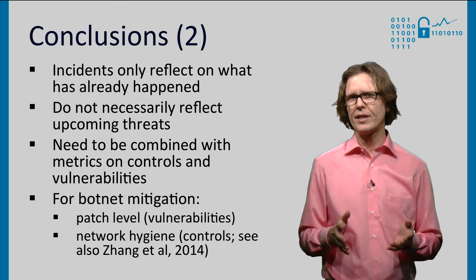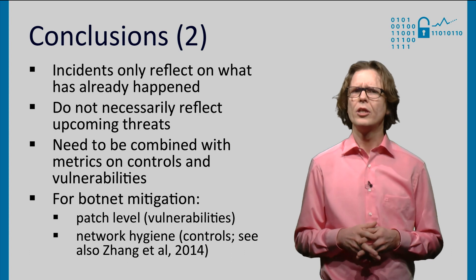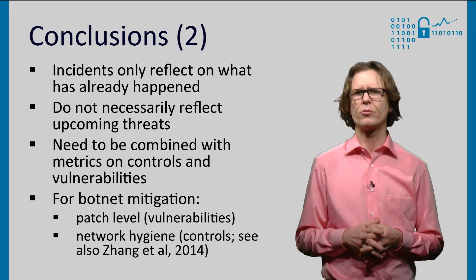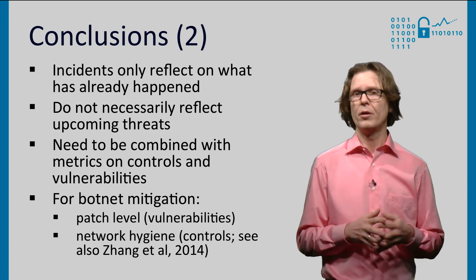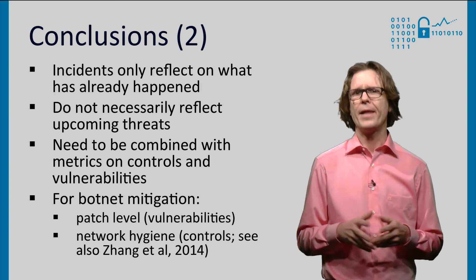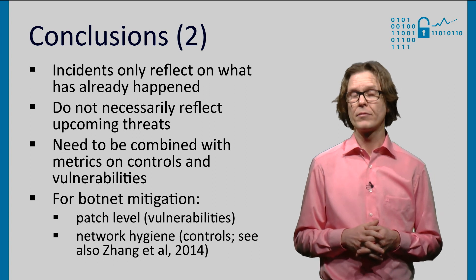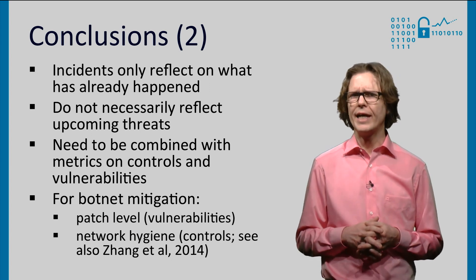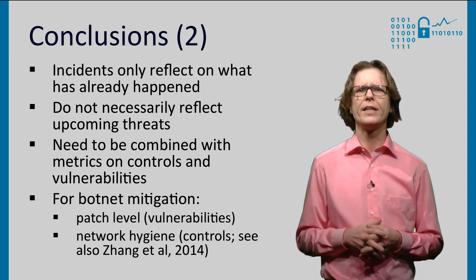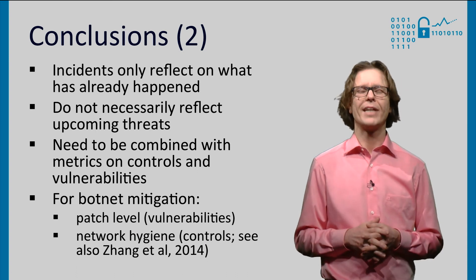A combination of different metrics is the most powerful way to gauge security. To return one last time to our extended example: to understand the effectiveness of botnet mitigation, you could complement the incident metrics with metrics on the level of software patching across the network — vulnerabilities — and with metrics on network hygiene, that is, whether the appropriate configurations and controls are in place. In fact, a recent study found that these hygiene metrics are strong predictors of the actual infection rates. We will put the link on the course site if you are more interested in this. That's it — thank you for listening.